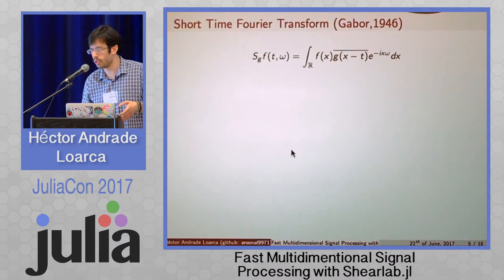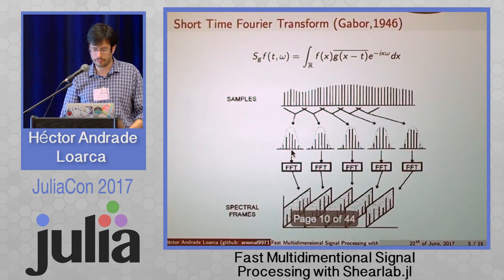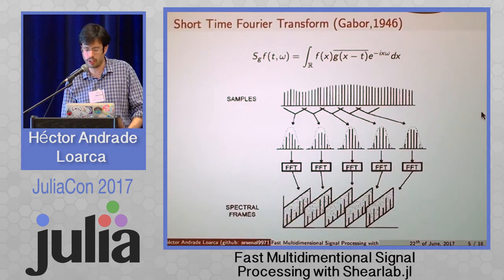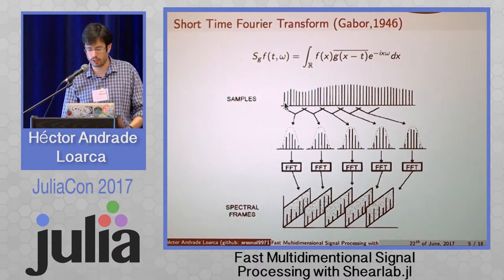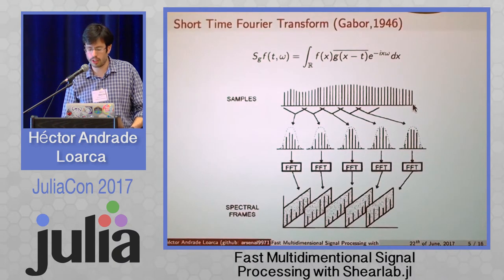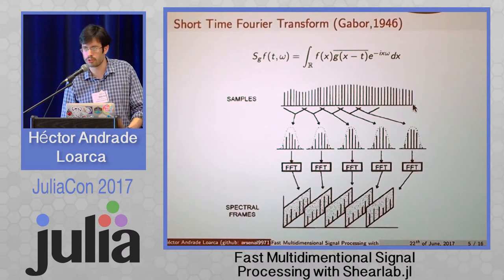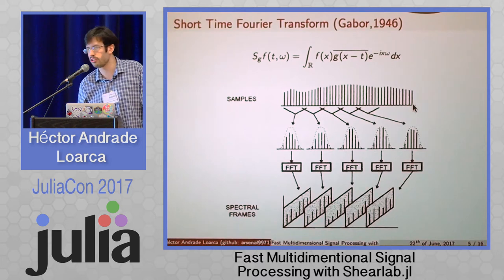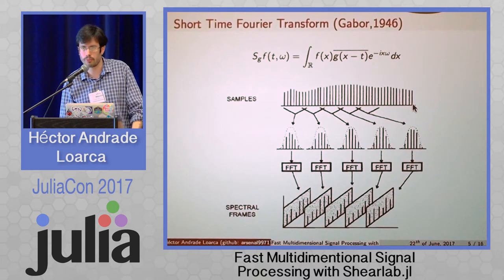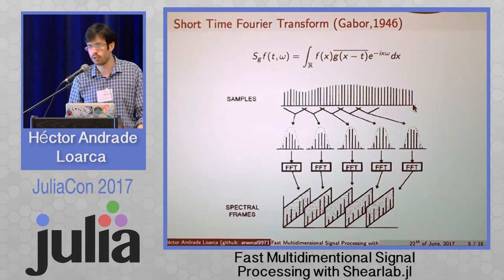This is called the short-time Fourier transform. It was proposed by German mathematician Dennis Gabor in 1946. You have discrete data, perform the Fourier transform in small windows that you move along time, and you can recover your data while also having temporal or spatial frequency information. The problem is that the window size does not change, so you can only extract features of a certain size, and you don't have very localized information about your data — such as singularities or smoothness.